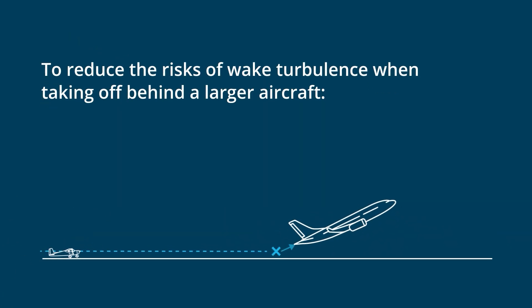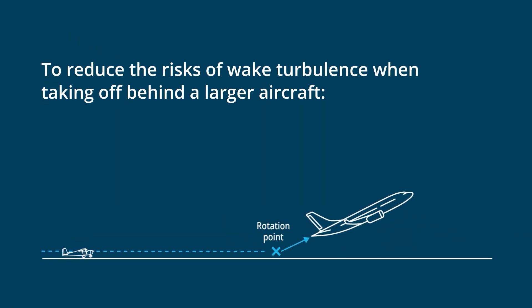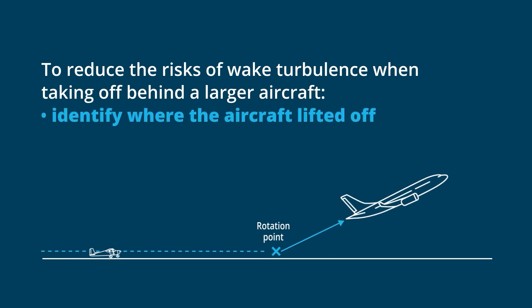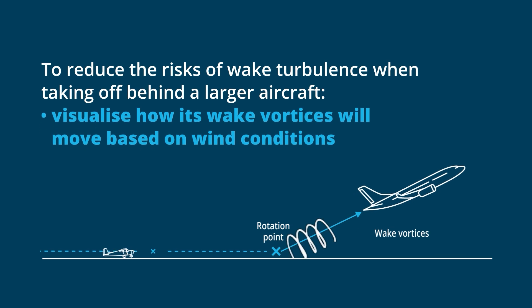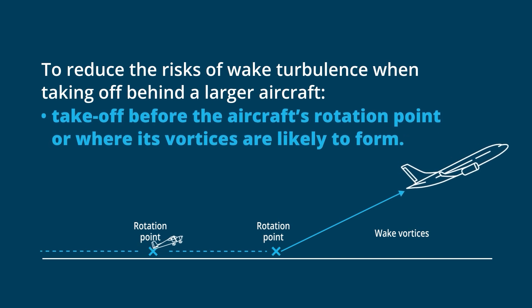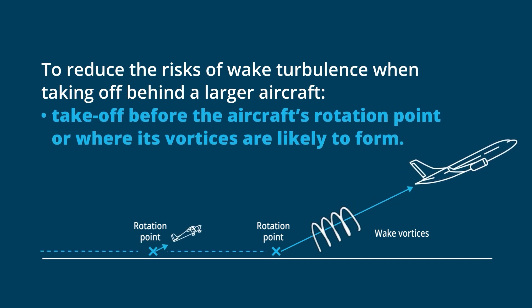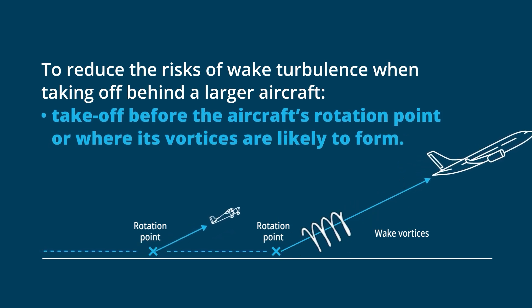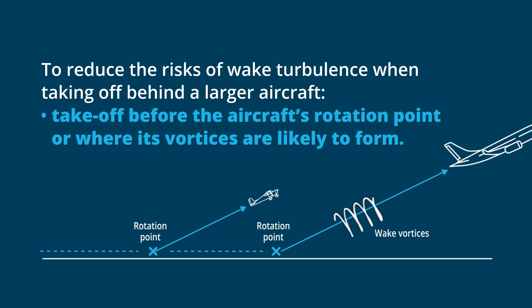To reduce the risks of wake turbulence when taking off behind a larger aircraft, identify where the larger aircraft lifted off. Visualise how its wake vortices will move based on wind conditions. Take off before the aircraft's rotation point or where its vortices are likely to form.